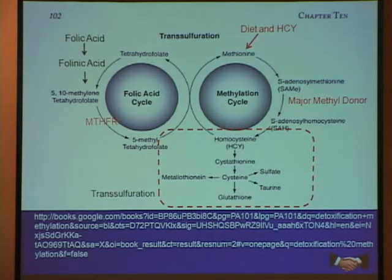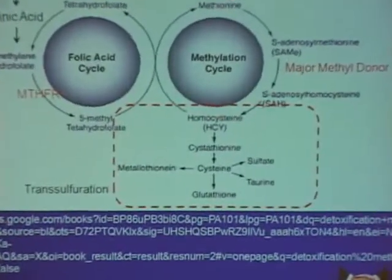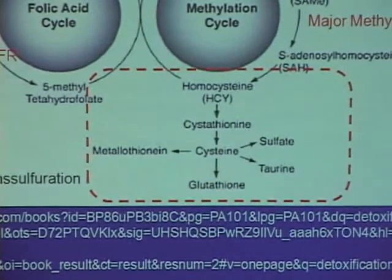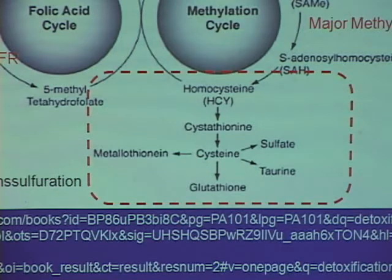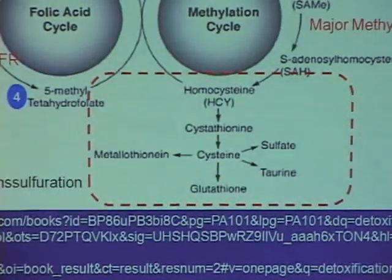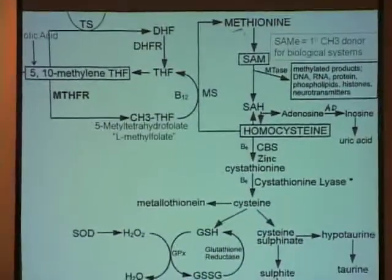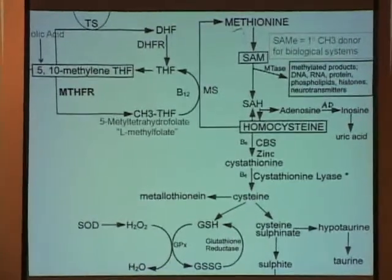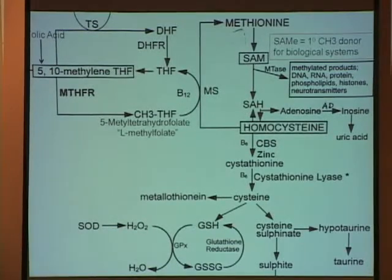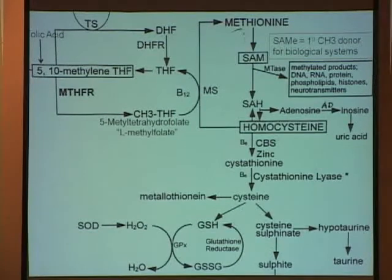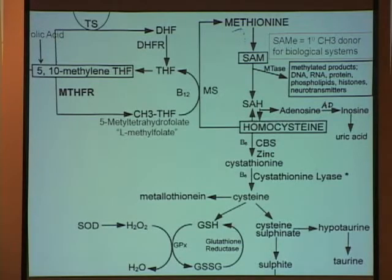In the transsulfuration pathway — the detoxification area — homocysteine can also be nudged into cystathionine and cysteine, which is the precursor for glutathione, metallothionine, sulfate, and taurine. Looking at this sketched out: we have the methyl cycle, the folic acid cycle, and MTHFR as the enzyme making this last conversion. If I have an MTHFR polymorphism — a genetic defect — I can't make that last conversion in the folic acid pathway, so I can't give up the methyl group that removes homocysteine. I'm going to have problems making these gears work.